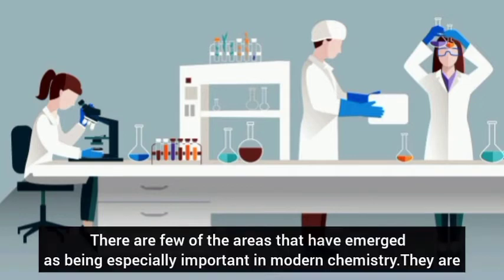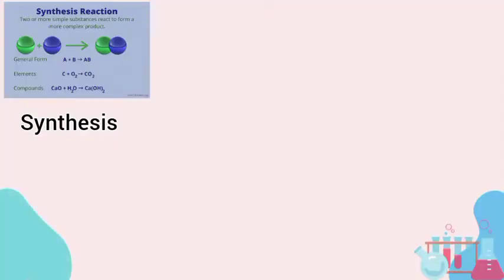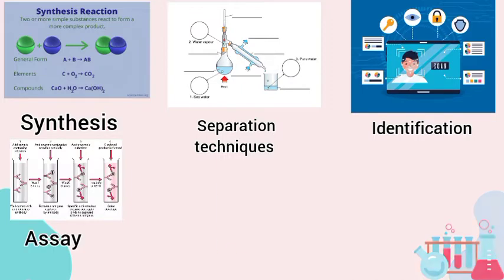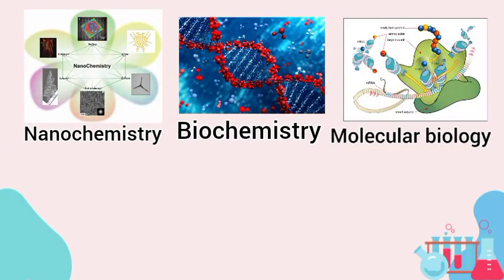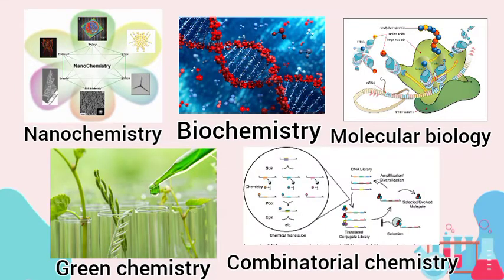There are a few sort of areas that are seen much as being especially important in modern chemistry. They are center-based segregation techniques, identification and acid, materials, polymers, nanocharmistry, biochemistry, molecular biology, queer chemistry, and combinatorial chemistry.